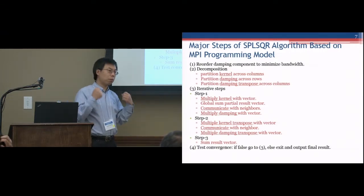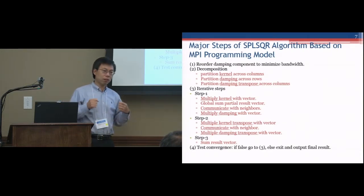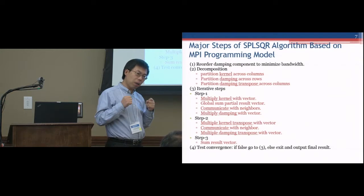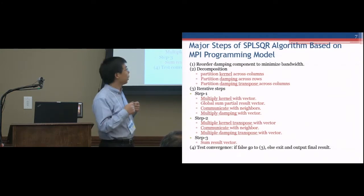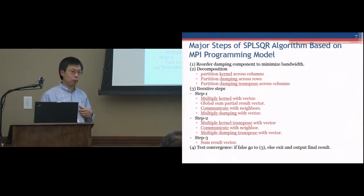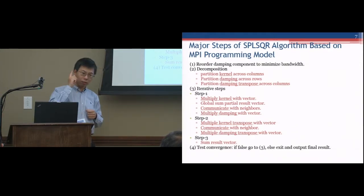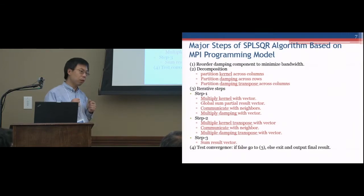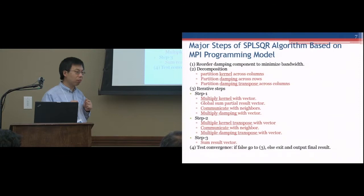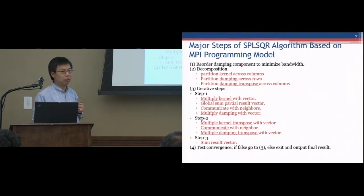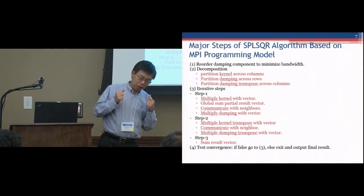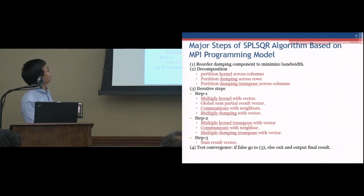In our approach, the damping part is very sparse, while the kernel part, although sparse, is relatively dense. So we keep two copies of the damping: one is the original damping, and the other one is the damping transpose. But for the kernel, there is only one copy. So here we sacrifice a little memory — a little more redundant data — however, the performance can be improved a lot.